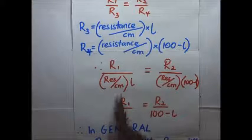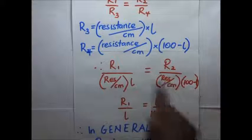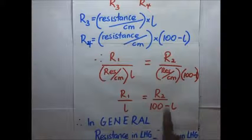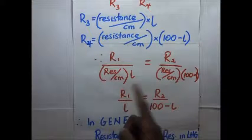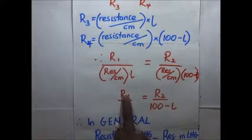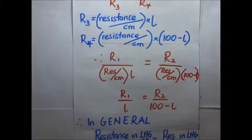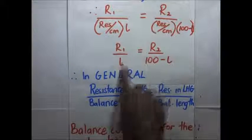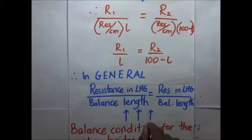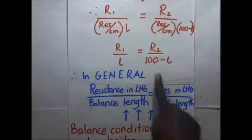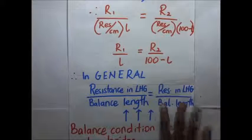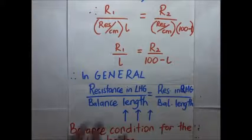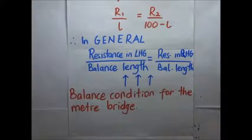When you multiply both sides, the resistance per centimeter cancels out, and you remain with R1 over L equals R2 over (100 minus L). Here, R1 is the resistance in the left hand gap, R2 is the resistance in the right hand gap, L is the balance length after moving the sliding jockey until the galvanometer shows zero deflection, and 100 minus L is the balance length on the right hand side. This is the balance condition for the meter bridge.